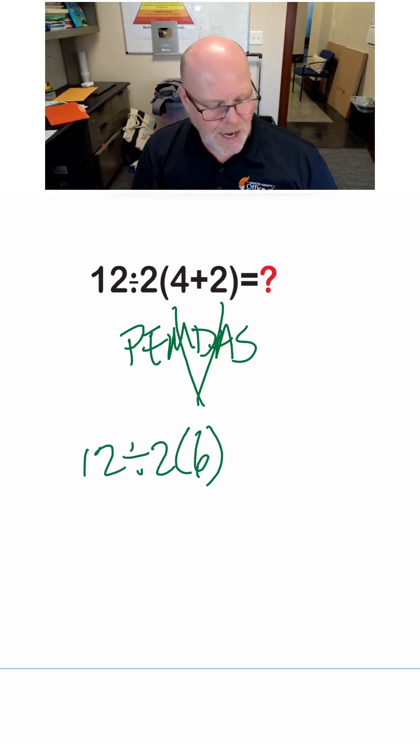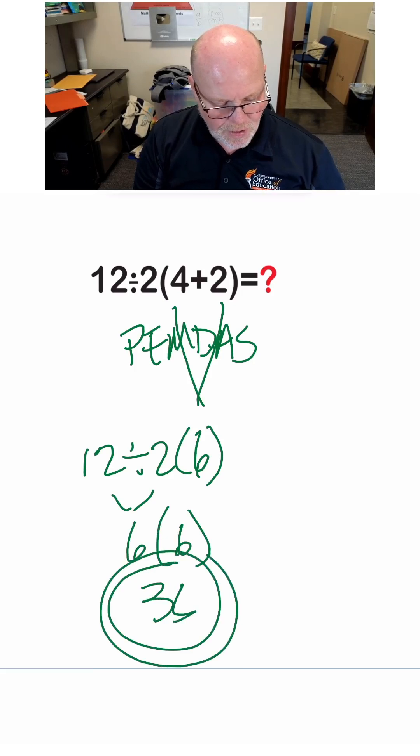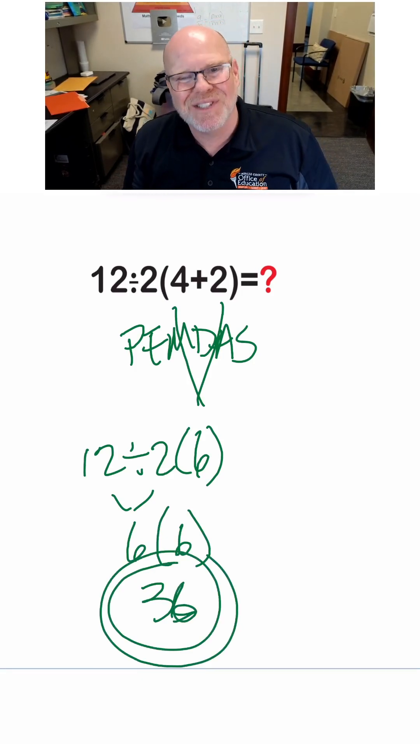Then we're going to do this left to right and we're going to get 12 divided by 2 is 6, times that 6, and we get 36. So the answer is 36, but really the question is just dumb.